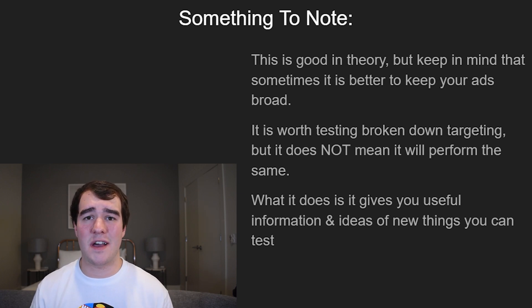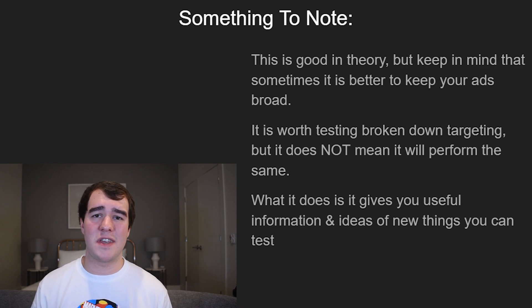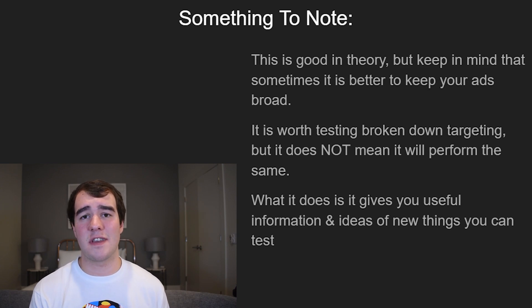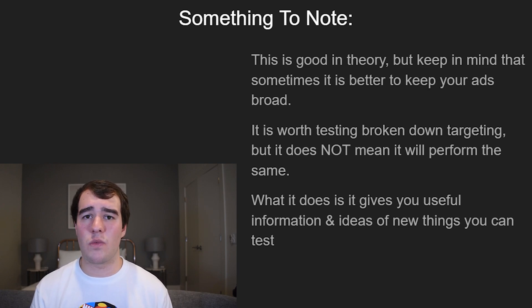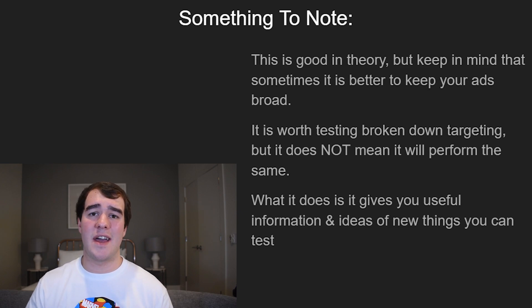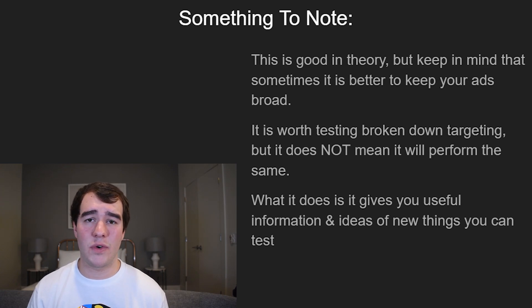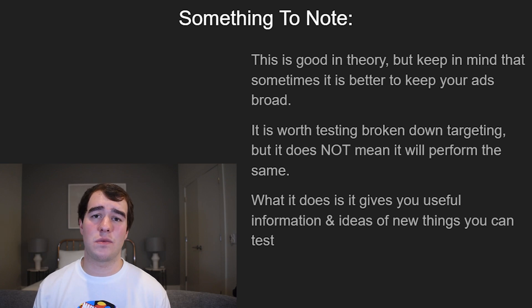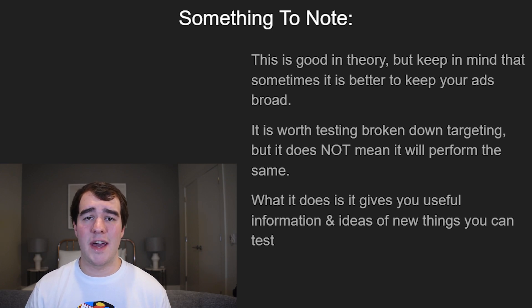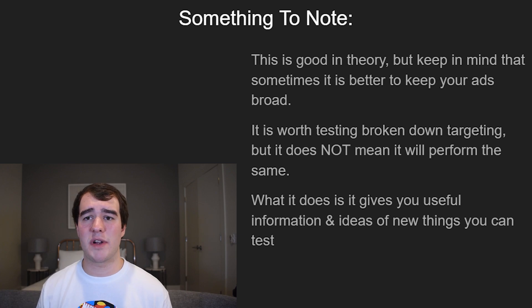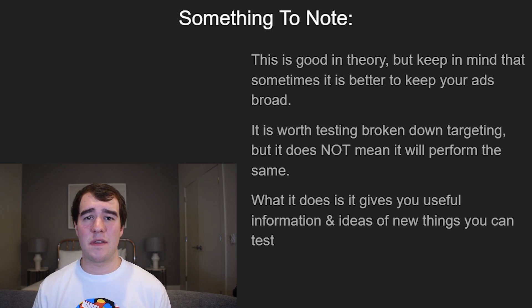I did want to say that this is not the holy grail number one secret to advertising, because that doesn't exist. You have to keep an open mind — sometimes 18 to 24 will just work really well because it works for that particular ad set and there's nothing you could do about it, no way to take more advantage of it. What it really does is give you useful information and ideas for new things that you can test. Most of the time I predict they will work out because the breakdown tab is a really good feature and usually it's pretty accurate.